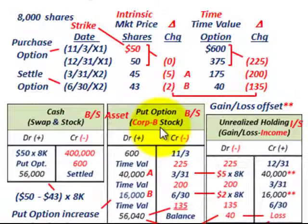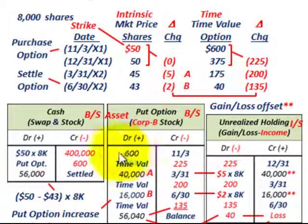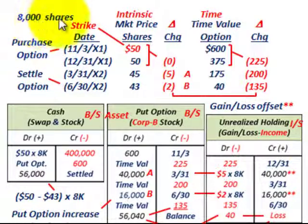Let's start with recording the put option. When we purchase the option, we debit our put option account for $600 and credit cash for $600. This is for 8,000 shares — the option to sell 8,000 shares.